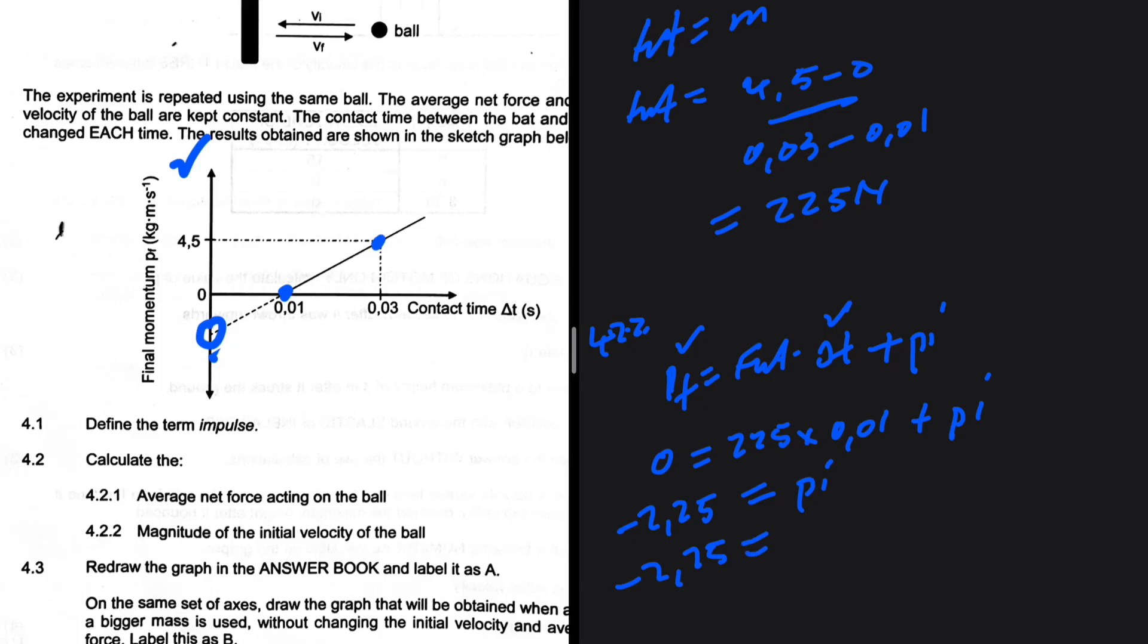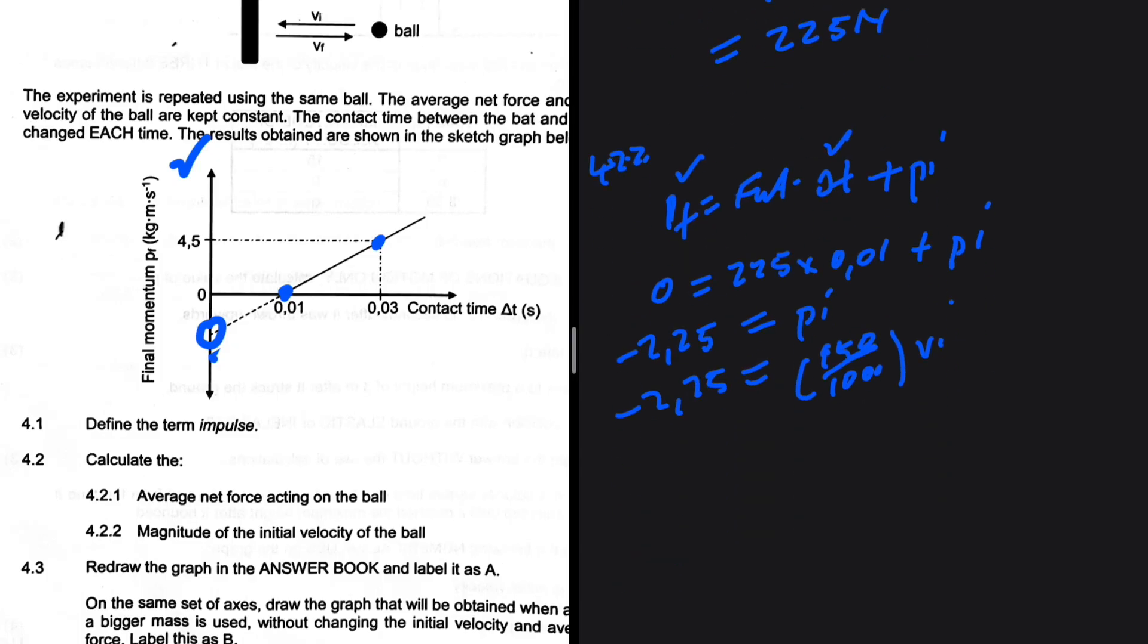But the reason why we're looking for p_initial is for us to find the initial velocity. The mass of the object is 150 divided by a thousand, multiplied by v_i. So v_i is equals to 15 meters per second. Just basic math.